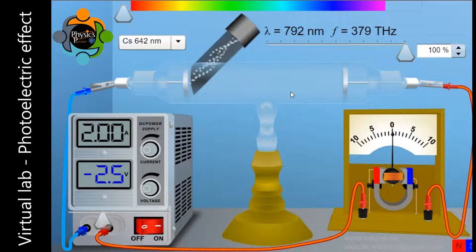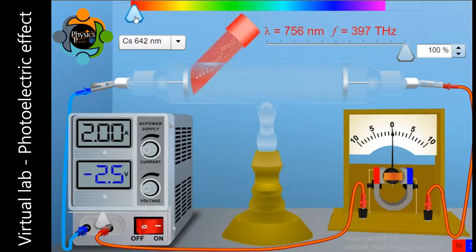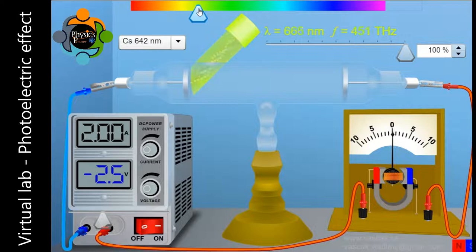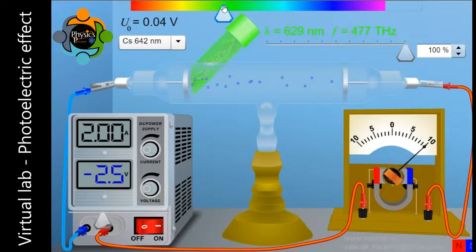So let us increase the frequency and let's see the effect. When I increase the frequency, you can see the changes, and after crossing the threshold you can see the electrons are starting to flow. So it means the photoelectric effect is started when the frequency is crossing the threshold frequency.